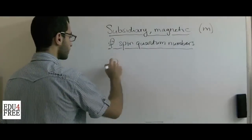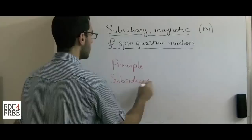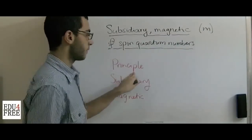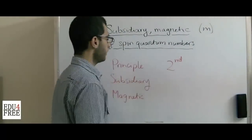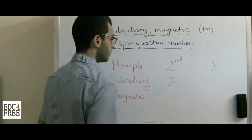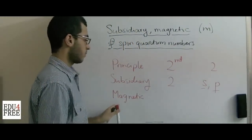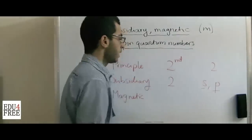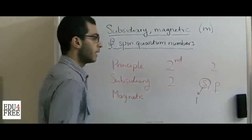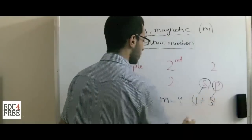Let's take the second energy level as an example. Its principal quantum number is 2, its subsidiary quantum number is also 2, and it contains S and P sublevels. The magnetic quantum number equals the total number of orbitals under these sublevels: S has 1 orbital and P has 3 orbitals, so M equals 1 plus 3 equals 4.